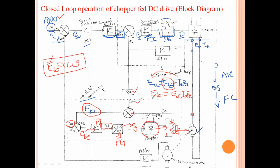So the speed can be increased above the base speed — for example to 1800 RPM. Above the base speed, if you want to control or increase the speed of the machine, this field weakening technique or field weakening loop is used. Field weakening loop is only applicable in the separately excited DC motor — remember this — because in a series DC motor the field and armature are both in the armature circuit, so the field cannot be controlled separately. This is the closed-loop operation of the chopper-fed DC drive block diagram.